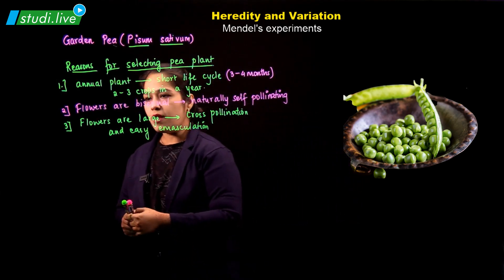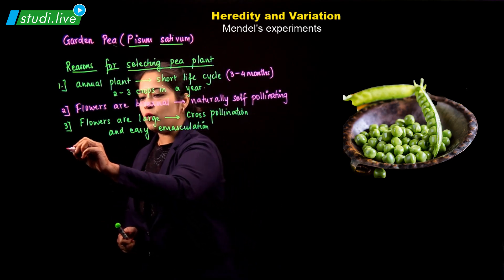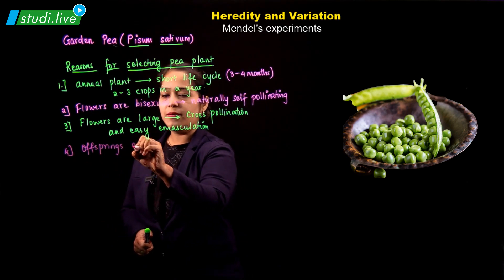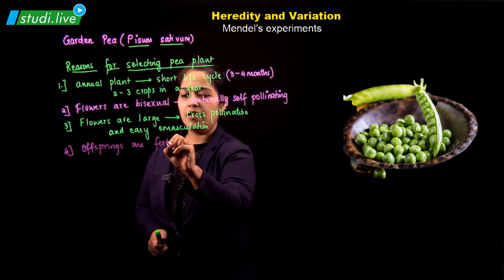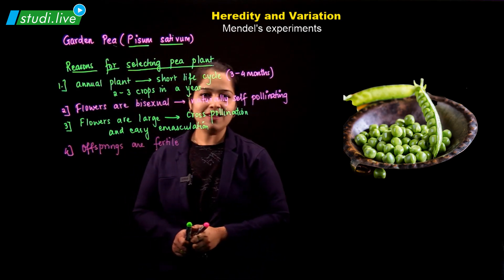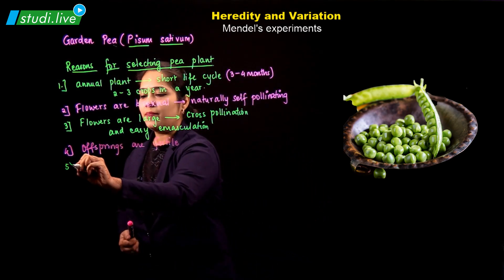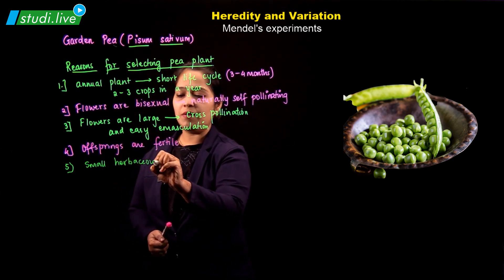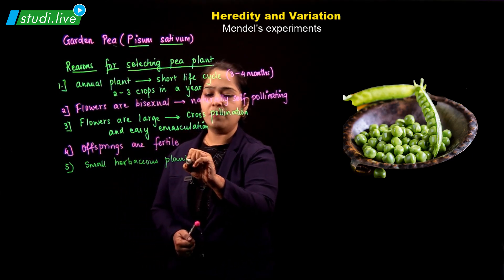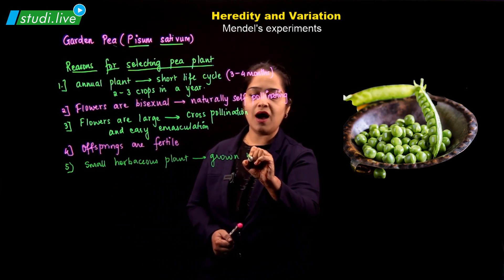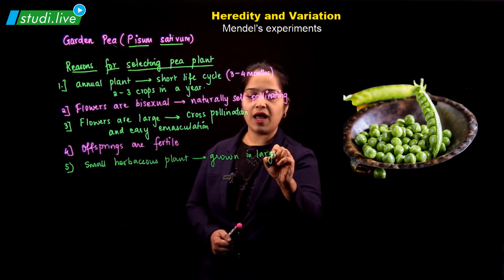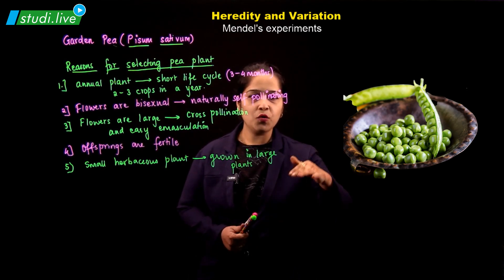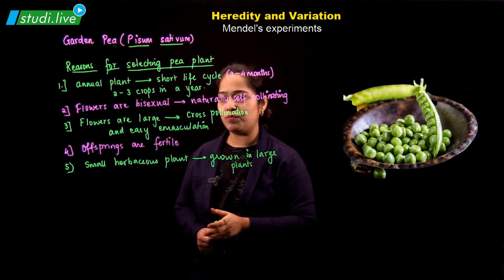The offspring produced by cross-pollination are also fertile. Additionally, this plant is a small herbaceous plant, and because of that, it can be grown in large numbers at the same time.